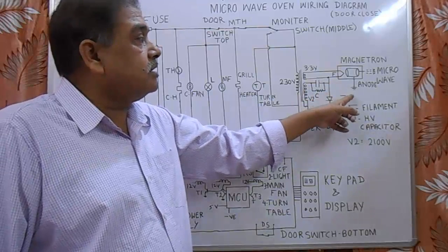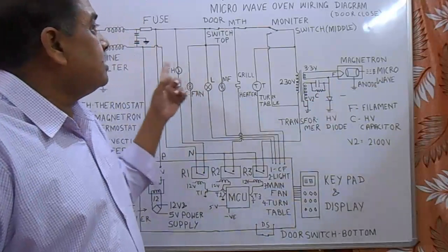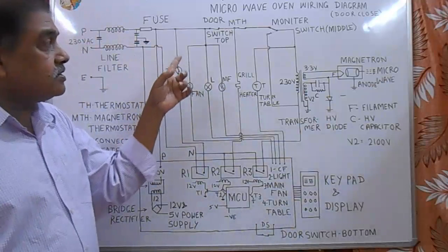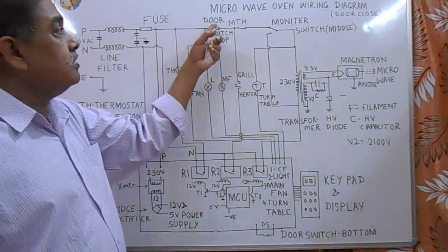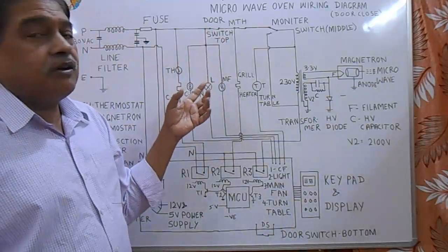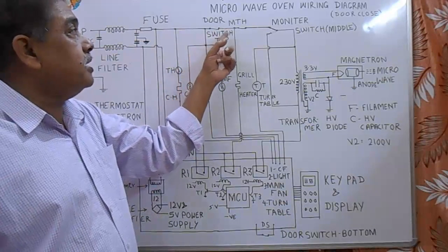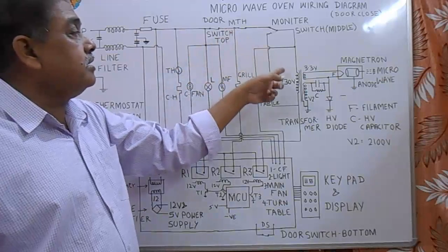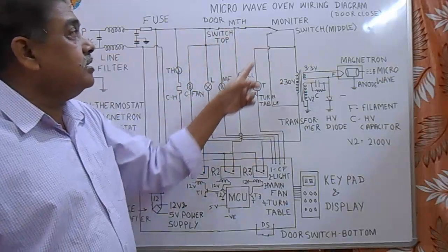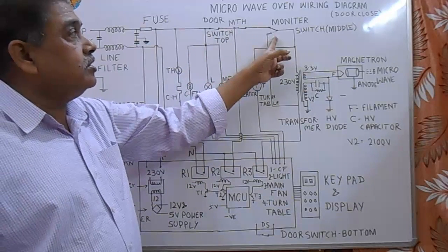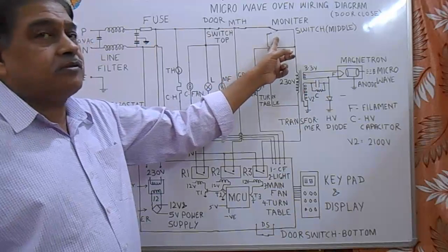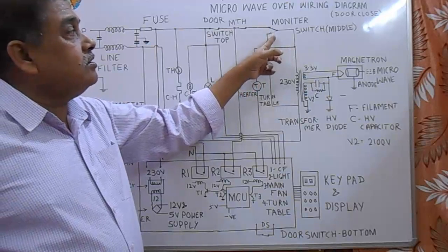There are three switches for safety purpose. This is door switch one. Whenever we open the microwave door, this is the second monitor switch. Whenever we open the door, it changes over to this point, changes over to the negative side of the transformer.